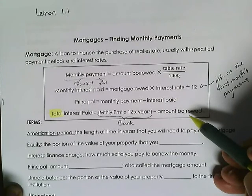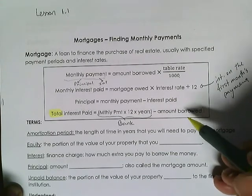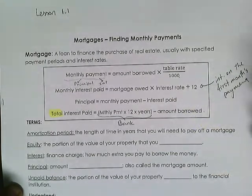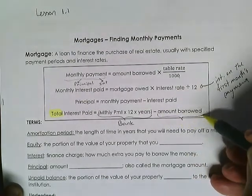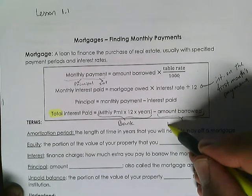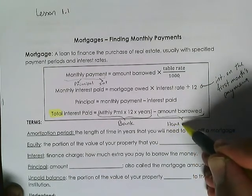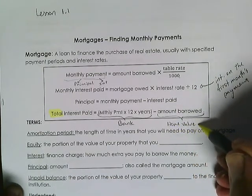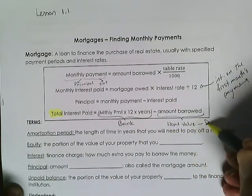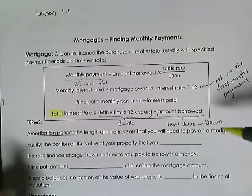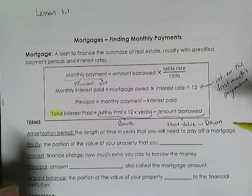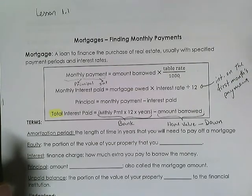The amount borrowed is the price of the home minus the down payment. If you made a down payment, you subtract that because you only borrow what is still remaining — the amount you still need to cover.